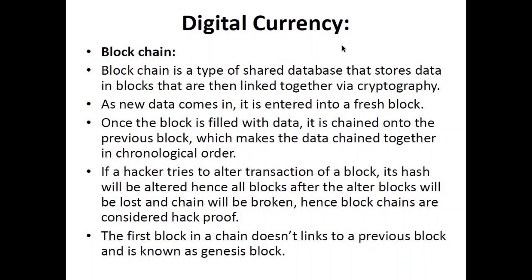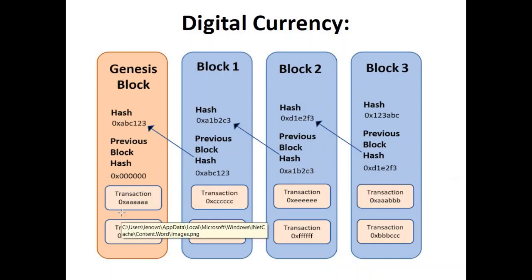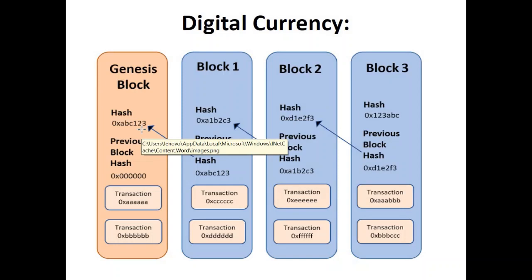Every block on the blockchain consists of three things: its own hash, the previous block's hash, and multiple transactions. In the diagram each block shows two transactions, but in the real world there are around 10 to 25 transactions per block. Once all transactions are filled in, the hash is calculated by running all the transactions through a hashing algorithm. Even slightly changing one character — for example changing one 'a' to 'b' in the input — changes the resulting hash completely.